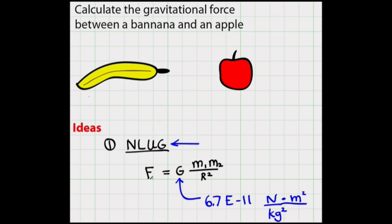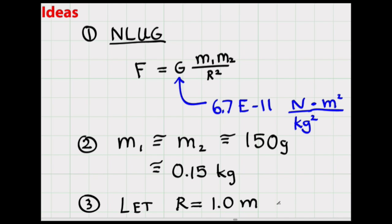So I'm going to apply Newton's law of universal gravitation. Here's the equation. The gravitational constant is known. I'm going to estimate that the mass of a banana is about one third of a pound, which is 450 grams divided by three, or about 150 grams. I'll estimate the mass of the apple is also about 150 grams, and I'll estimate the separation distance is one meter. So now I have all the information I need for my calculation.